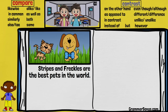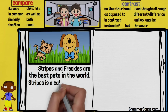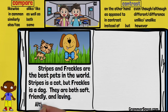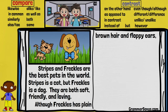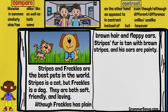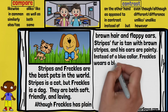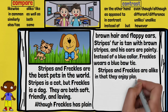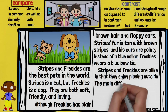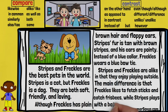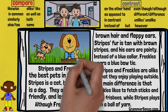Stripes and Freckles are the best pets in the world. Stripes is a cat, but Freckles is a dog. They are both soft, friendly, and loving. Although Freckles has plain brown hair and floppy ears, Stripes' fur is tan with brown stripes and his ears are pointy. Instead of a blue collar, Freckles wears a blue bow tie. Stripes and Freckles are alike in that they enjoy playing outside. The main difference is that Freckles likes to fetch sticks and catch frisbees, while Stripes plays with a ball of yarn. Zeke did a great job writing about Stripes and Freckles.